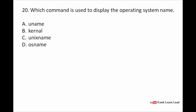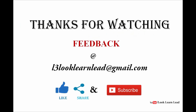Which command is used to display the operating system name? It is uname — you have to remember this. uname displays the name of the operating system along with its version. This was all about the questions from Unix and Linux. Thank you and please subscribe.